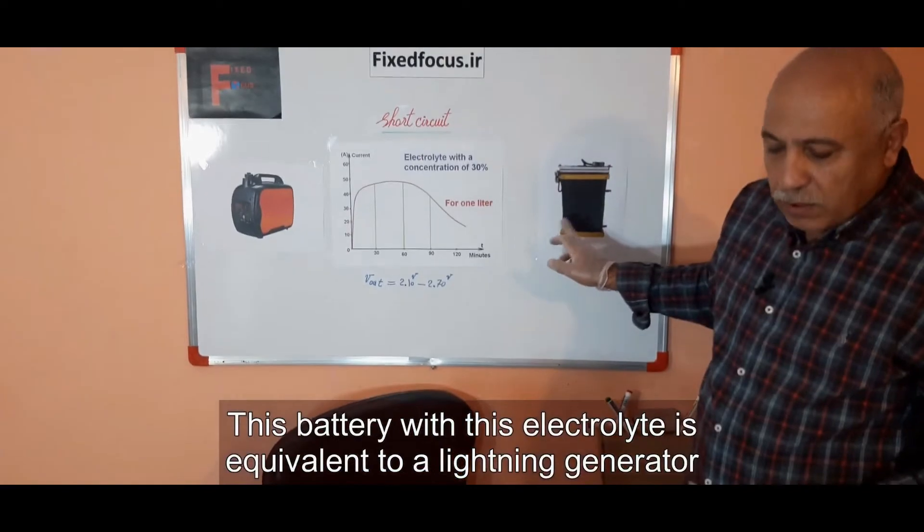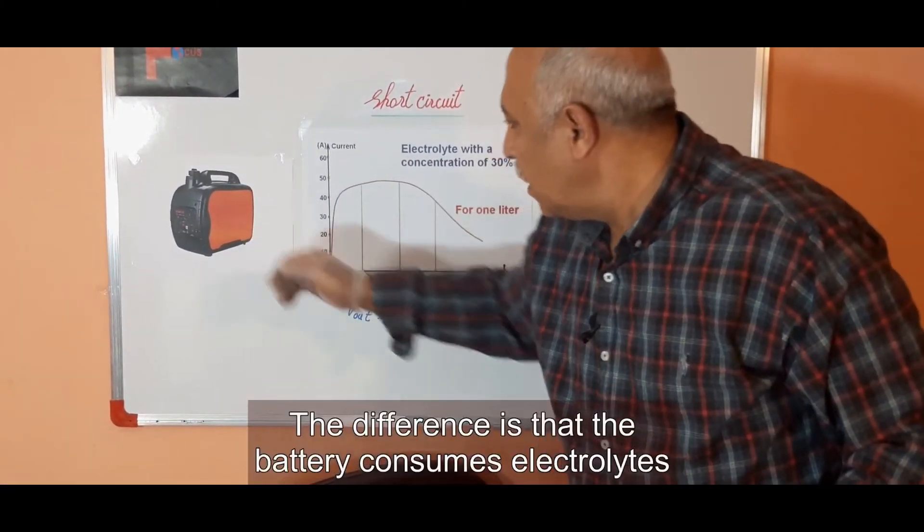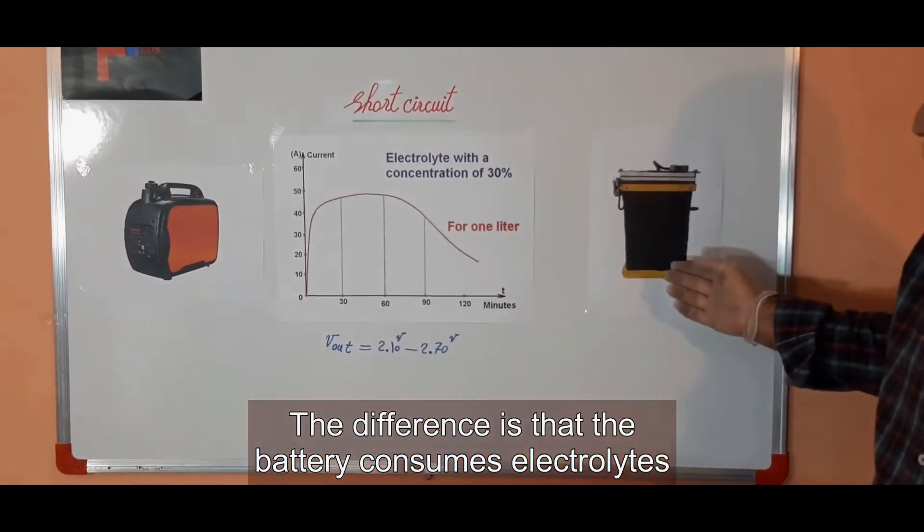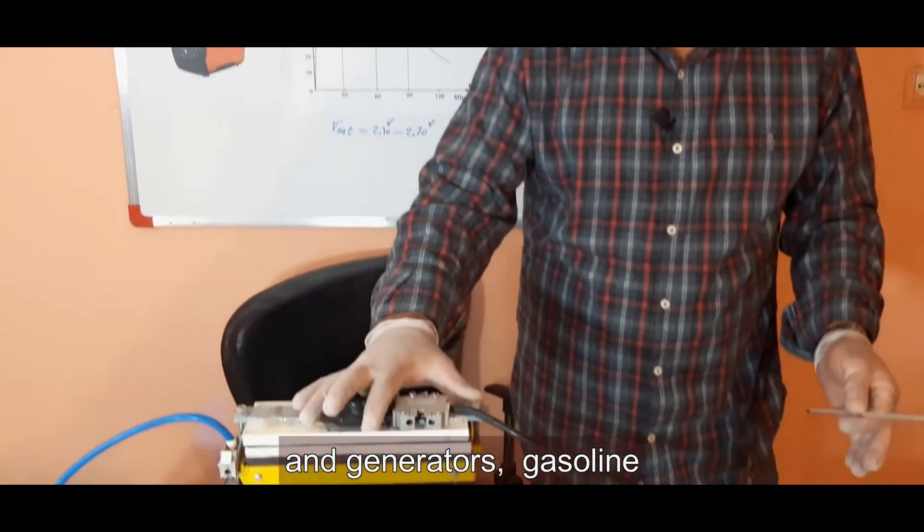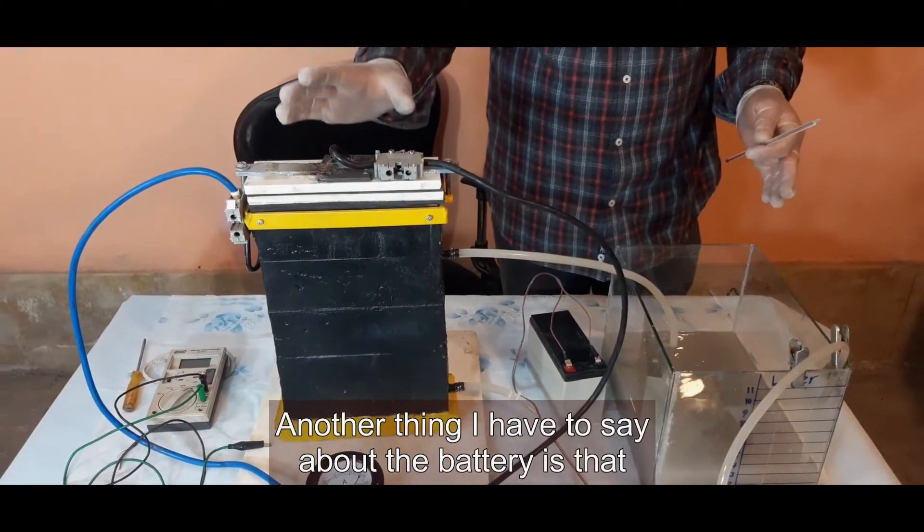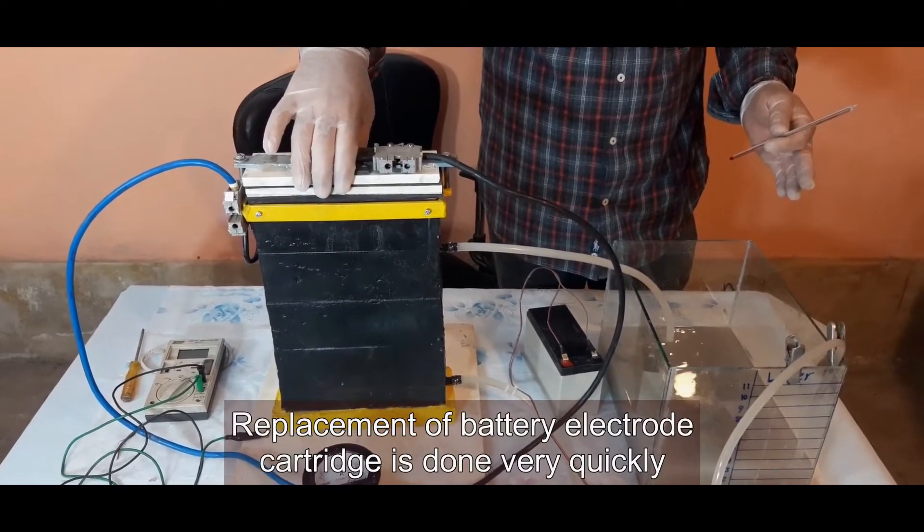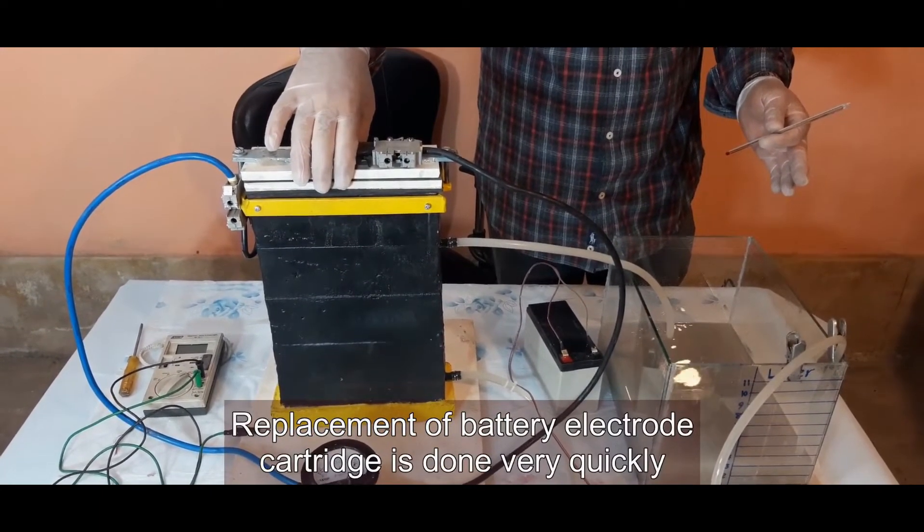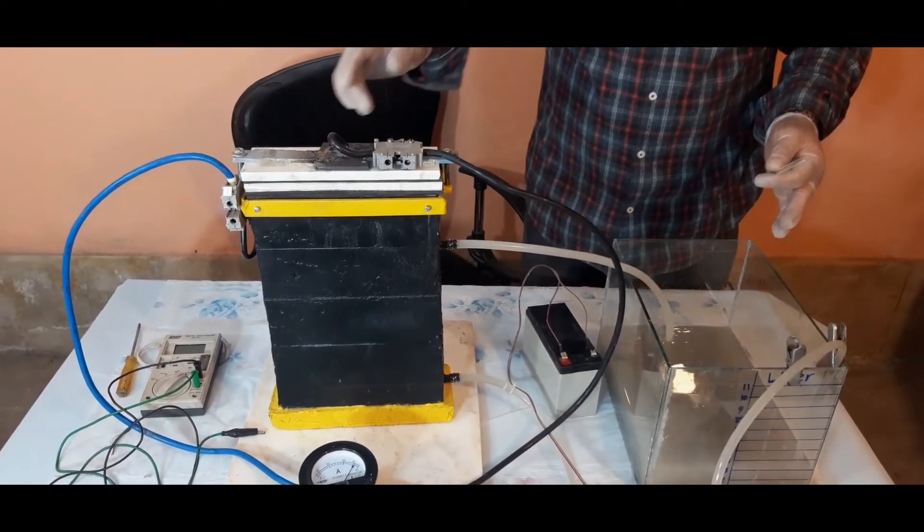This battery with this electrolyte is equivalent to a lightning generator. The difference is that the battery consumes electrolytes and generators consume gasoline. Another thing I have to say about the battery is that replacement of the battery electrode cartridge is done very quickly for 400 hours.